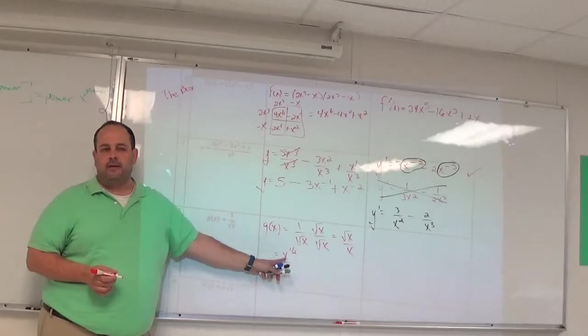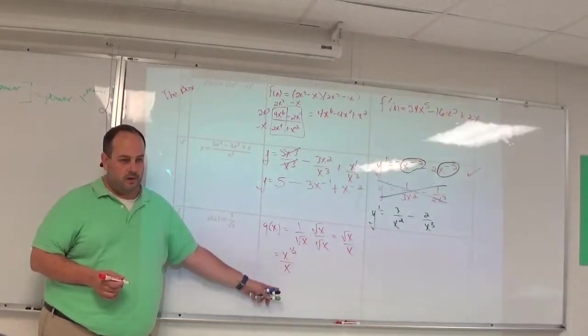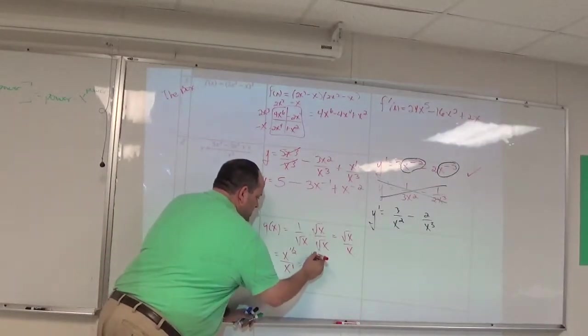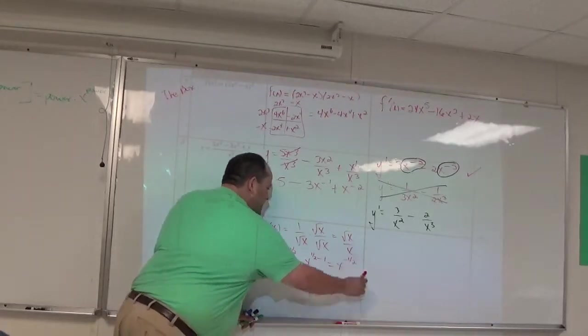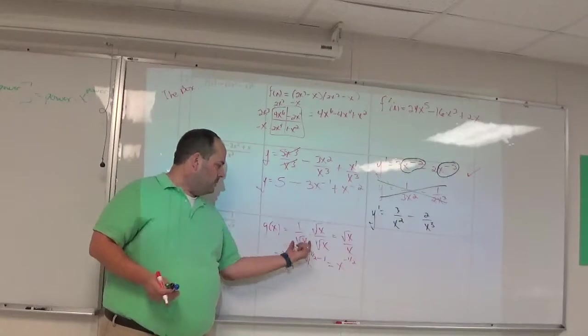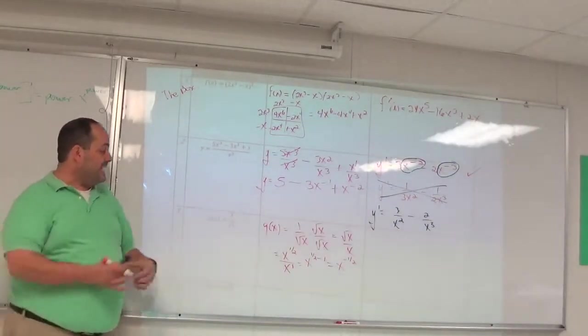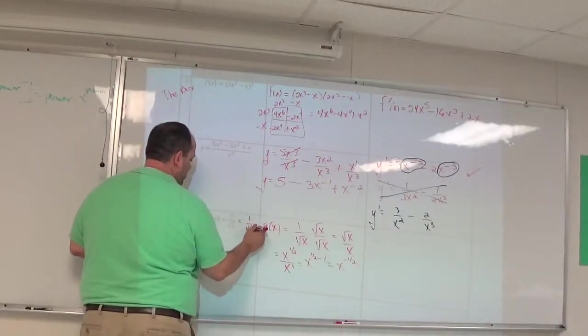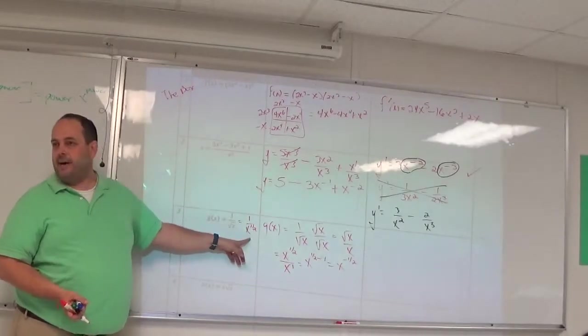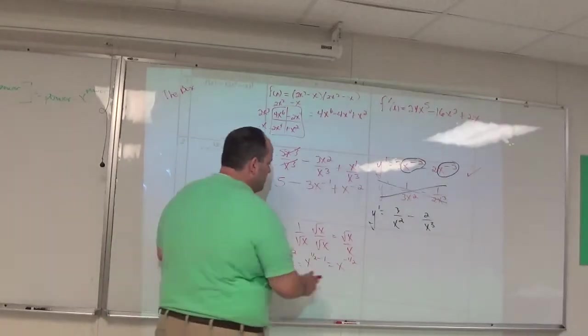You could think about this if this is division, and we have another way to write the square root of X. The square root of X is X to the half divided by X. There's that exponent rule for division. We can make this X to the one-half minus one, which is X to the negative-half power. That's fine.